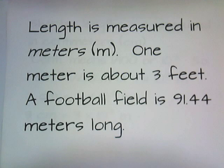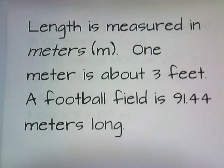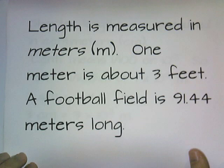In chemistry, we measure length in meters. One meter is about three feet, so if you take three rulers and put them end to end, you'll get a meter. Meters are good for measuring moderate distances, like the length of a room. A football field is about 91.44 meters long.